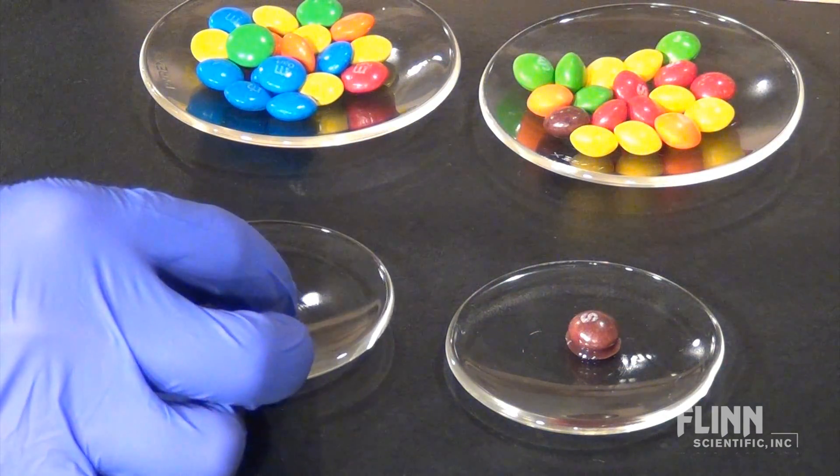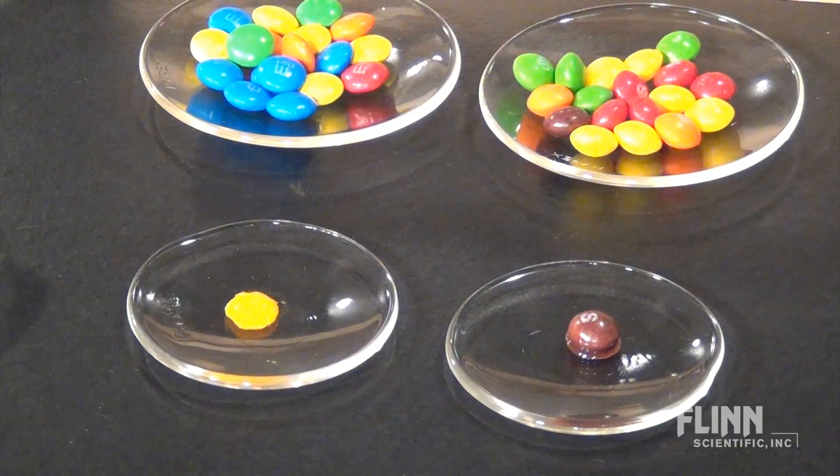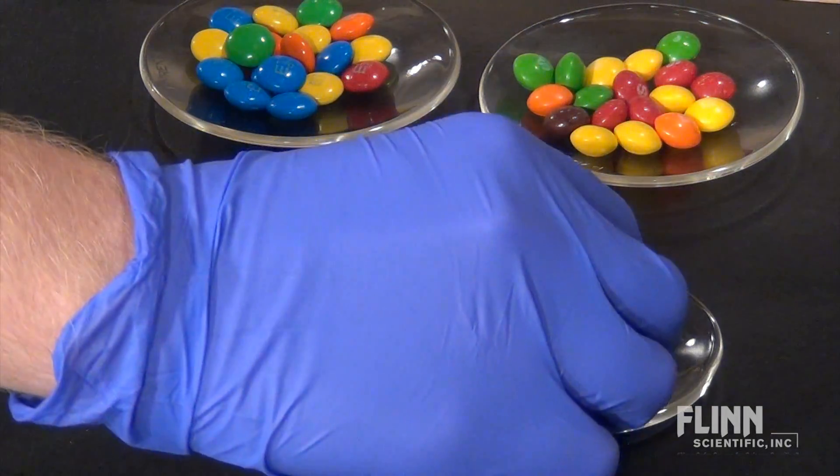Explore paper chromatography using candies such as M&Ms or Skittles. Begin by soaking the candy in a few drops of distilled water.